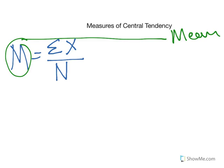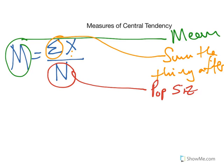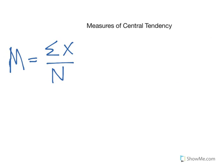Mean, sigma, means sum the thing after. In this case, we're going to be summing X. Capital N is the population size, or the number of people in the population, or whatever it is—people, rats, whatever. So mean is equal to the sum of X divided by N, where N is the sample size.